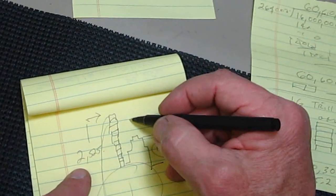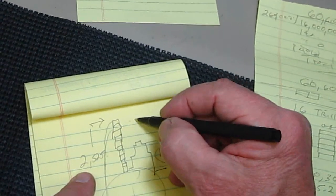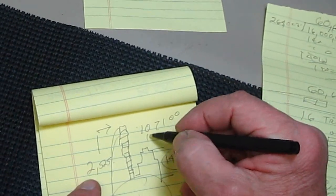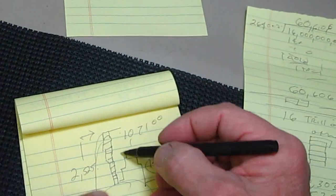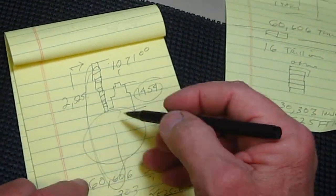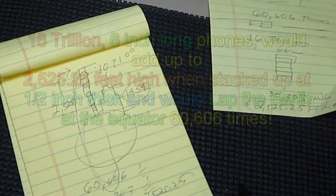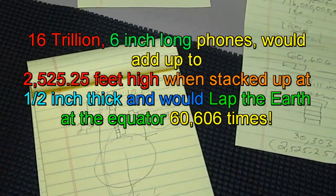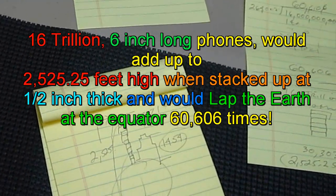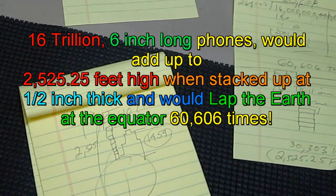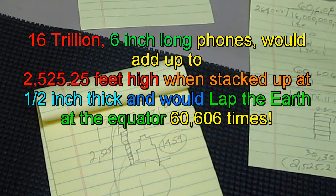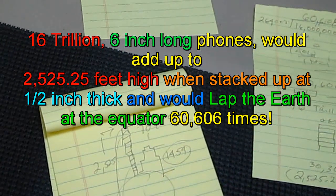So there you go. 16 trillion cell phones lined up would be 2,525 feet high and would go around the Earth 60,606 times end to end.